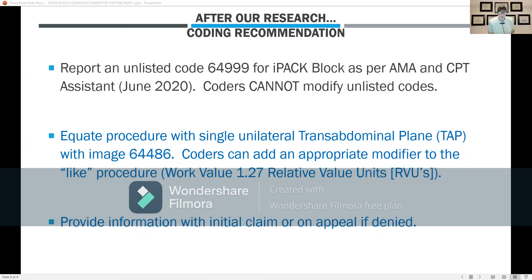Second, you want to equate this procedure to a comparable one so the insurance company has a basis for comparison. I asked Dr. Donahue what would be an appropriate procedure to compare it to. For your knowledge, 64486 is the transversus abdominis plane block with ultrasound guidance. IPAC blocks are typically done under ultrasound — as Dr. Donahue explained, it's difficult to reach that area without ultrasound guidance. The work value for 64486 is 1.27. If you were reporting 64450, switch to 64999; you will have been slightly under-billing by 0.5 RVUs from that time period.